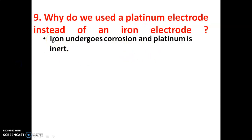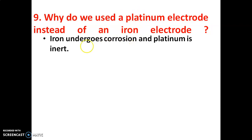Ninth question: Why do we use a platinum electrode instead of an iron electrode? We use platinum as the electrode because iron undergoes corrosion, whereas platinum is inert and non-reactive. Therefore, we use platinum as the electrode in a conductometer.